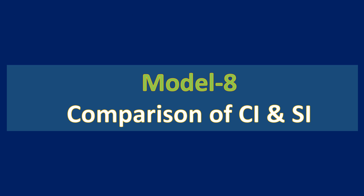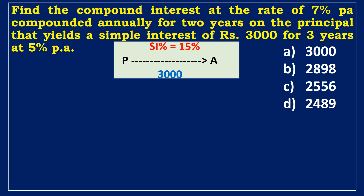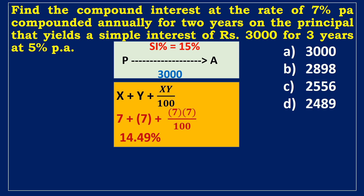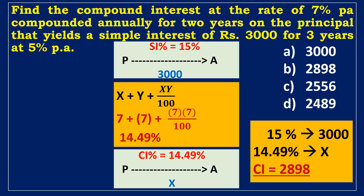Model 8: Comparison of compound interest and simple interest. Find the compound interest at 7% per annum compounded annually for 2 years on the principal that yields a simple interest of 3000 rupees for 3 years at 5% per annum. SI at 5% for 3 years = 15% = 3000 rupees. CI at 7% compounded for 2 years = 14.49% = x rupees. Cross-multiplying: if 15% = 3000, then 14.49% = x. Compound interest = 2898 rupees.